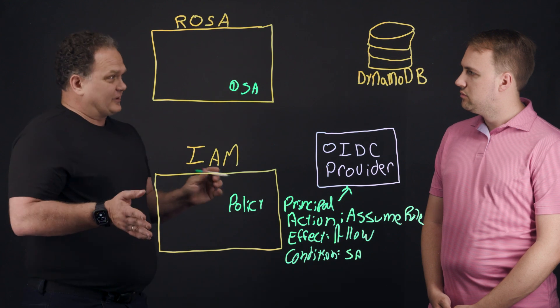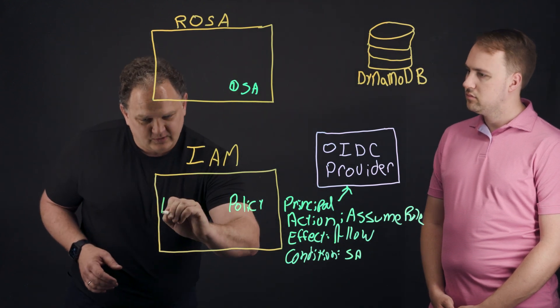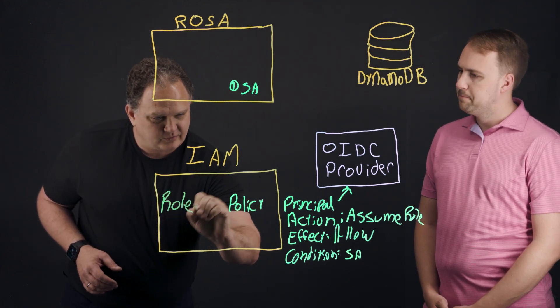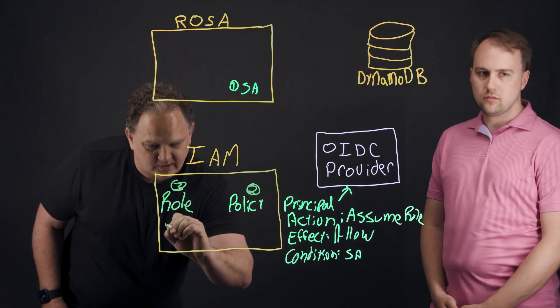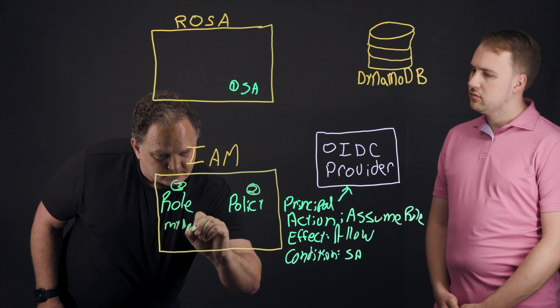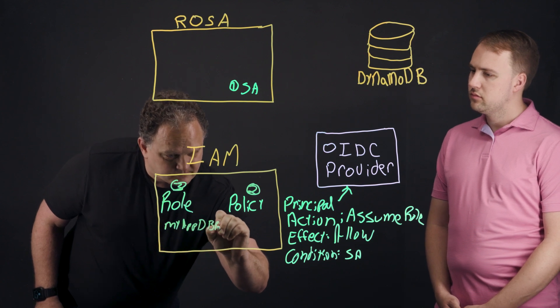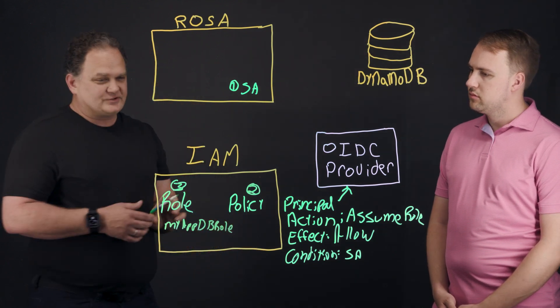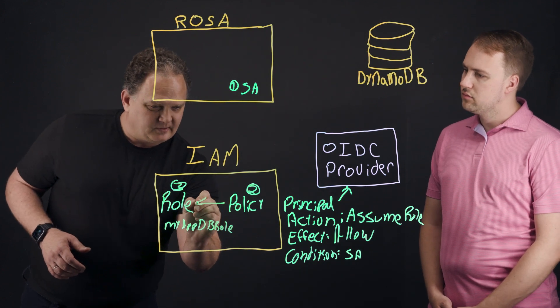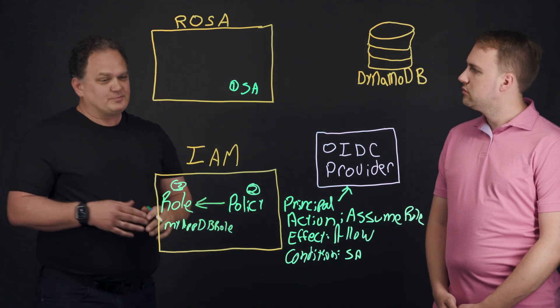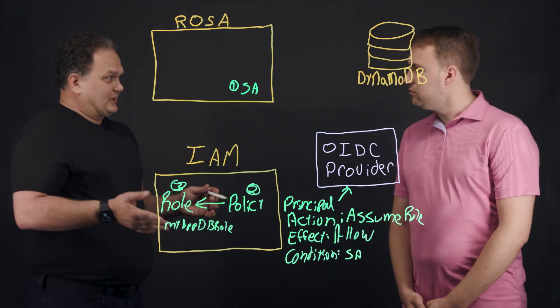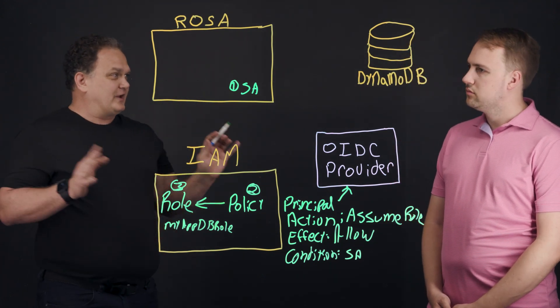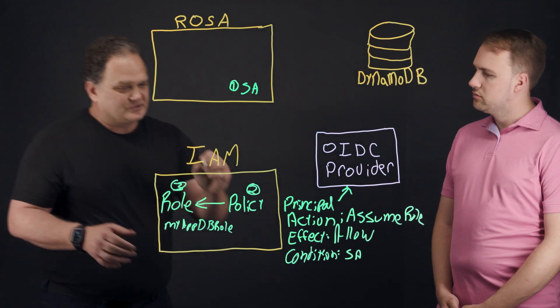Also, what this is going to do is create a trust policy with a role. We're going to create a new role. So this is two, we create that policy. Then we create a role. We'll call it like my app DB role. It can be whatever name you want, obviously. And then we assign this policy to that role. So at this point, we have a policy that lets OIDC provider assume the role and create the STS credentials. But we haven't given it access to anything yet, which is the next step.